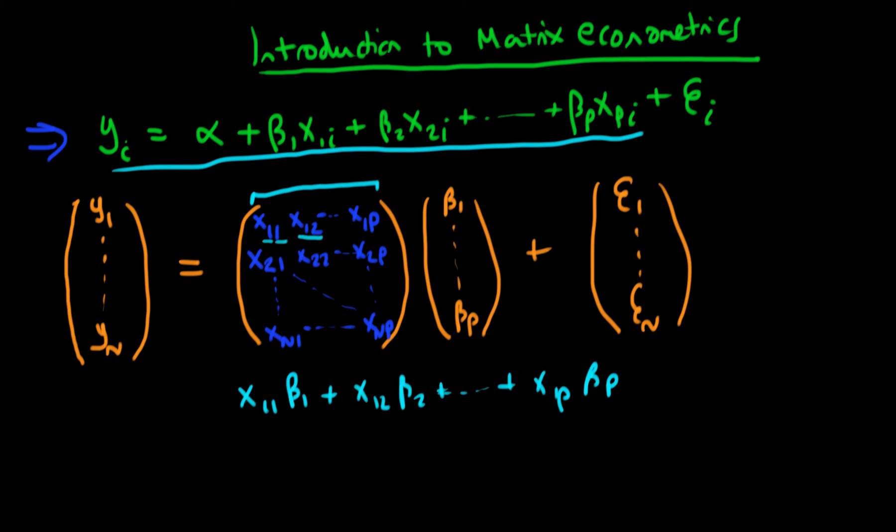And we can actually simplify this and just write down a matrix equation. So we can write that y, our vector y—and the way in which I note vectors in this course is I use a line to indicate a vector and I use a curly line or squiggly line to represent a matrix—so I've got my vector of dependent variables y is in fact equal to X times my coefficient vector beta plus my vector of errors.